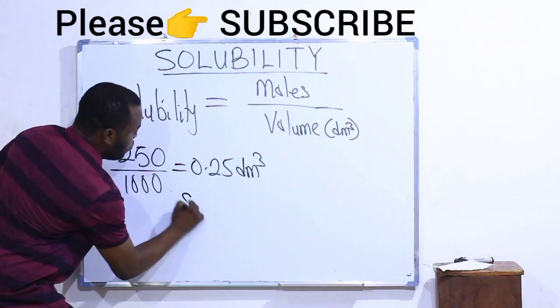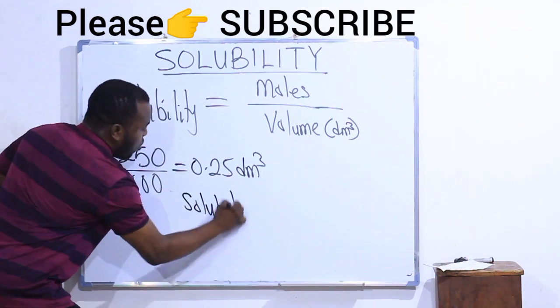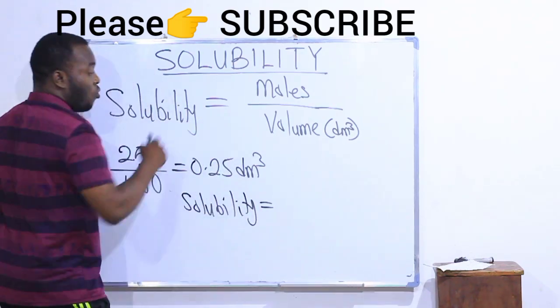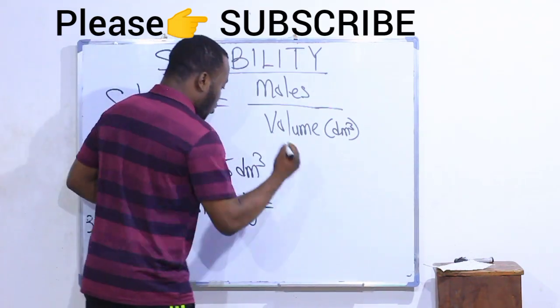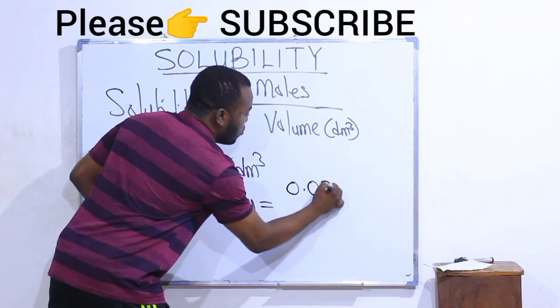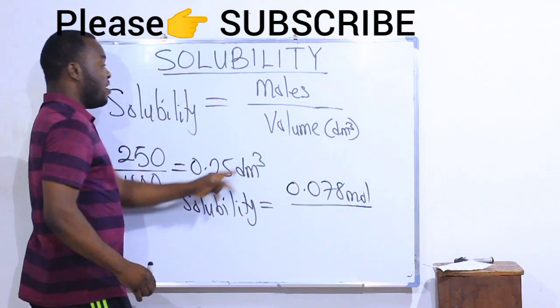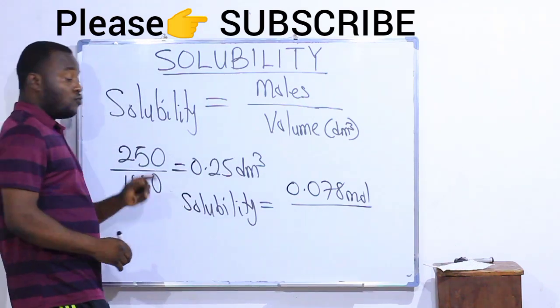So, my solubility now becomes the number of moles which the question gave us to be 0.078 mole divided by the volume which we have converted to dm³, and that gives us 0.25.